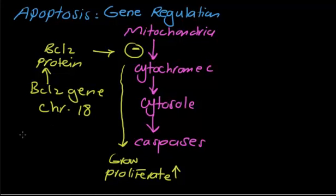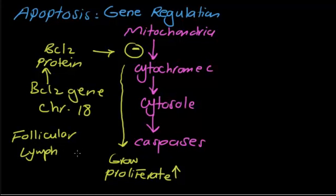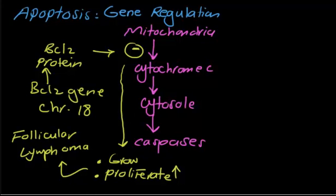The famous example of this regulation is follicular lymphoma. In follicular lymphoma, there is a problem with the gene — activation of BCL2 gene leads to BCL2 protein, causing inhibition of apoptosis. The mitochondria will not release cytochrome C, and instead the cell will grow and proliferate more, becoming more susceptible to mutations, leading to the formation of follicular lymphoma.